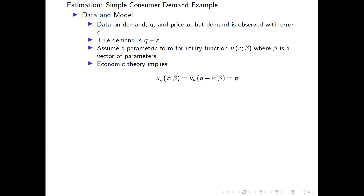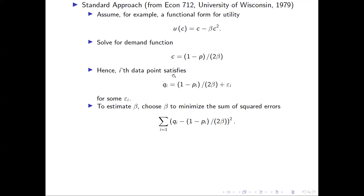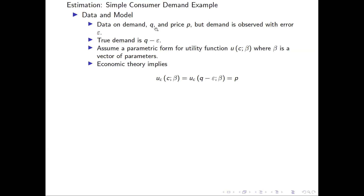Now let's look at a very simple problem in economics. Suppose you observe demand and price. Purchases are observed with some error, and we want to estimate the demand function. Your data for demand is Q, and the true demand is Q minus epsilon — you observe true demand plus some noise. Assume you have some parametric form for the utility function: U of C with some function, and beta is a vector of parameters. You want to estimate these parameters from your demand data.